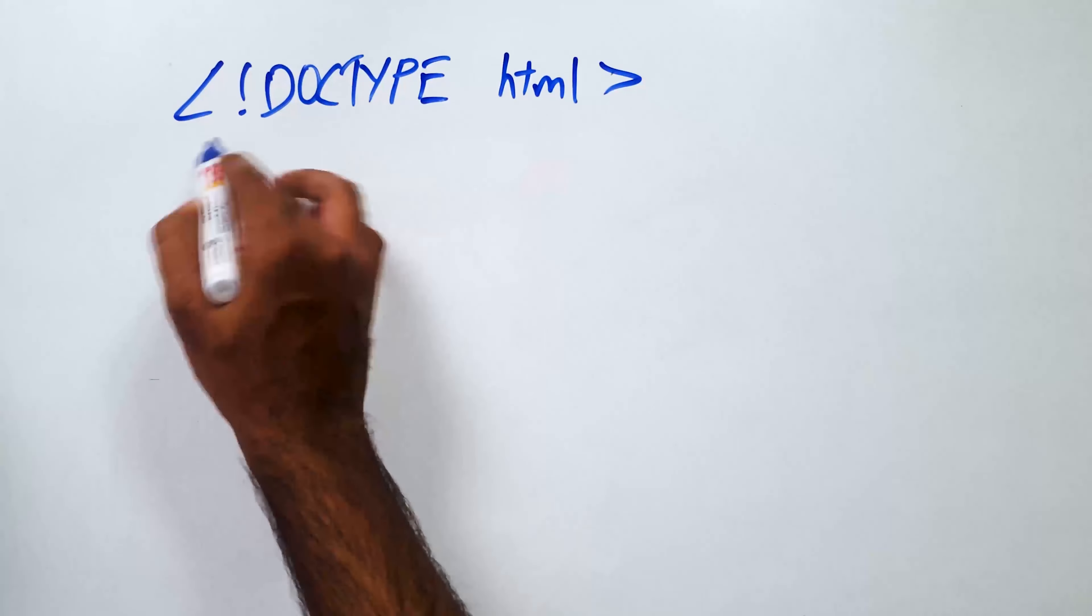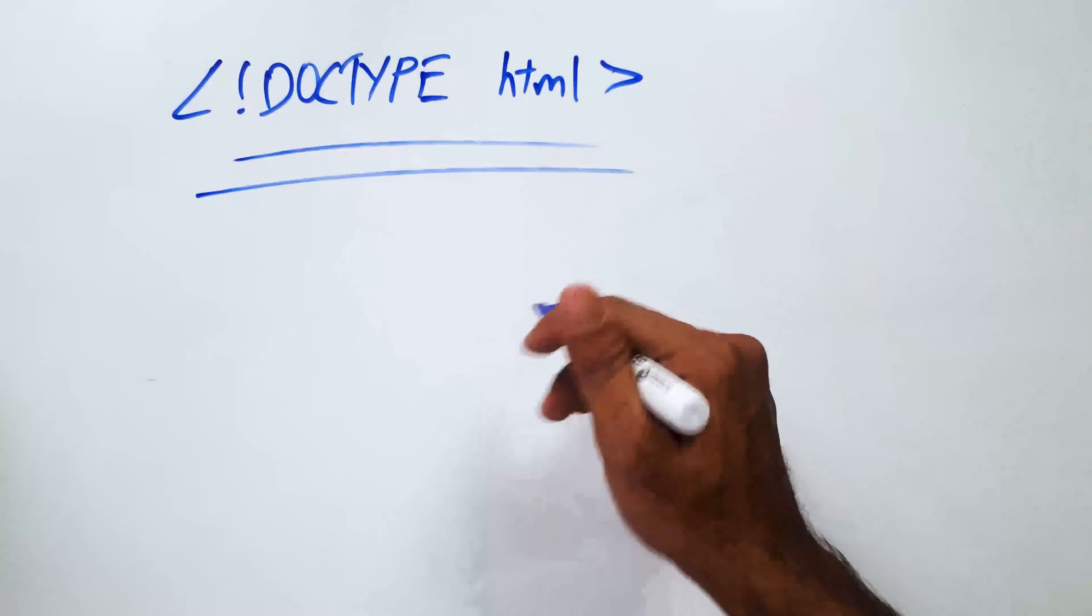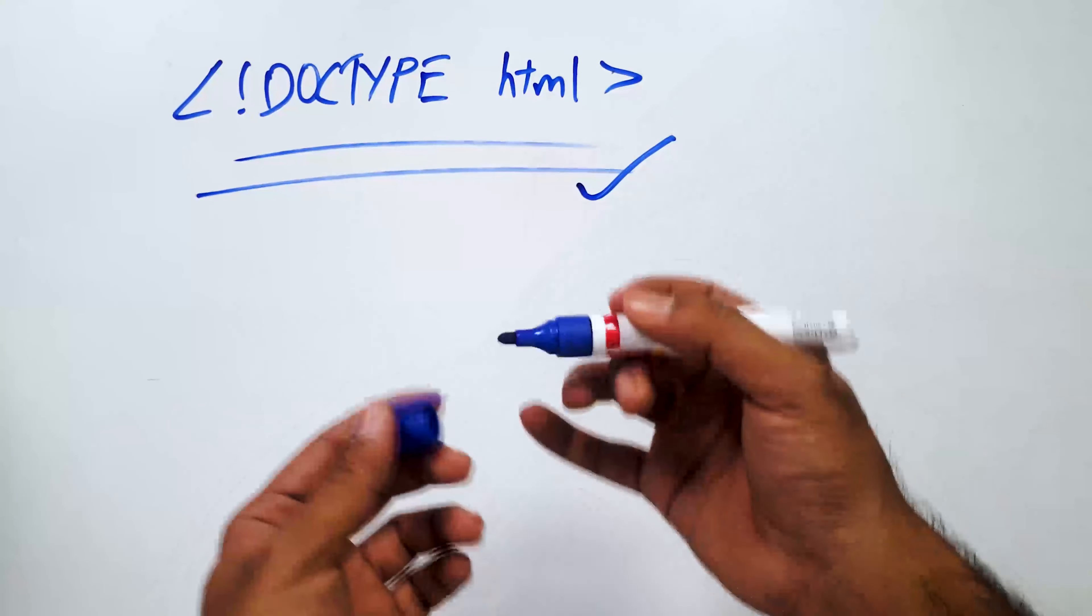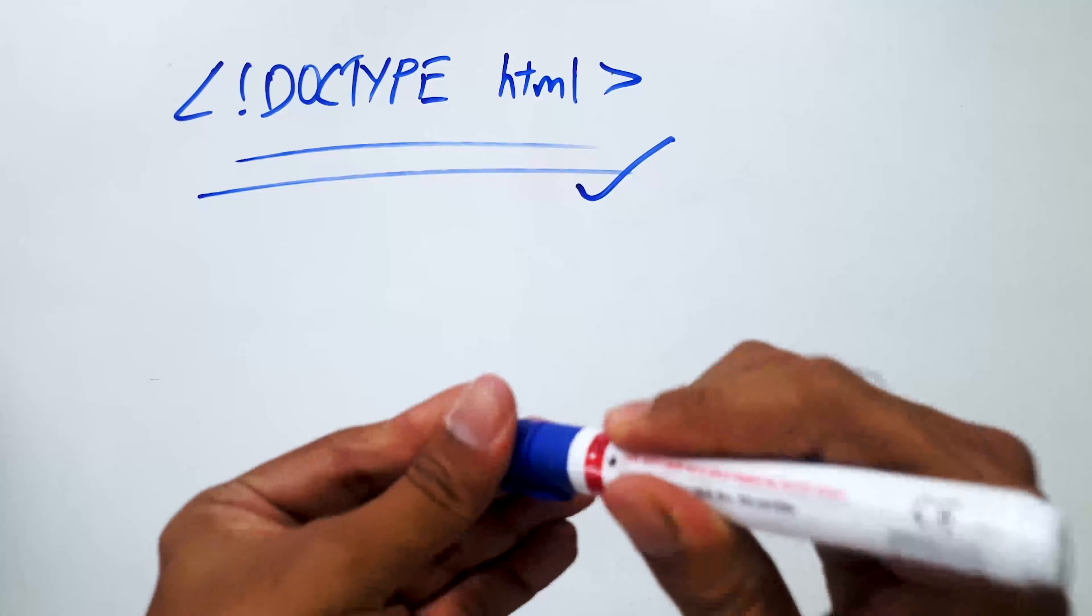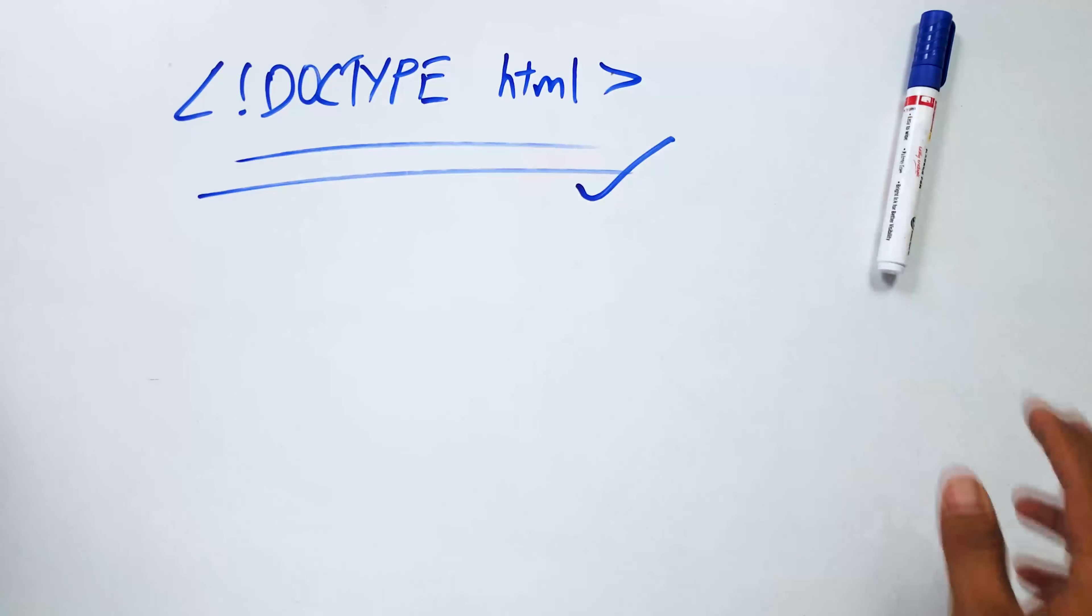Do you remember this? This is something that we see in every single first line of our Visual Studio code, index.html, basically that, right? We see this particular line in every first line of our index.html. Alright, why do we need this? And I'm going to talk a lot more about some more additional elements that we're seeing in the recent videos in the index.html.